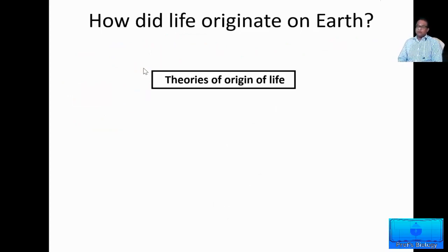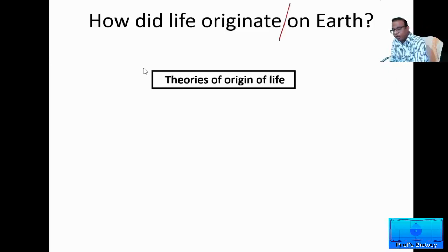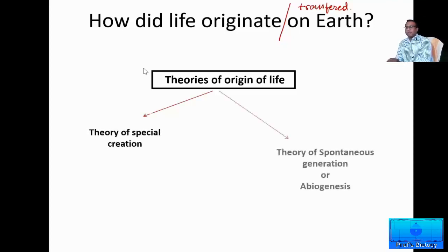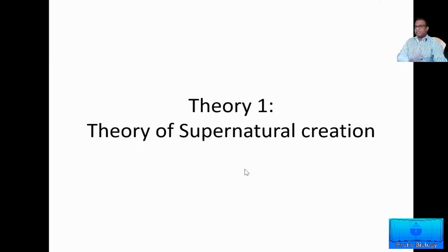How did this life originate on earth? There is a debate whether life really originated on earth or was transferred from some part of the universe onto the earth — we really do not know. Nonetheless, there are theories which try to explain the origin of life on earth. Some of these theories which will be explained in this class are the theory of special creation, the theory of spontaneous origin, and the theory of panspermia. Let us take up these theories one by one.